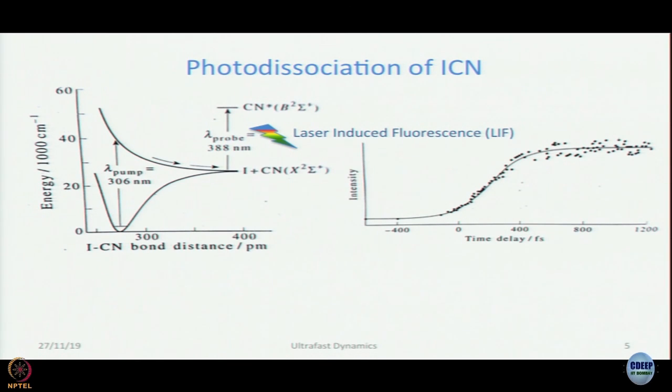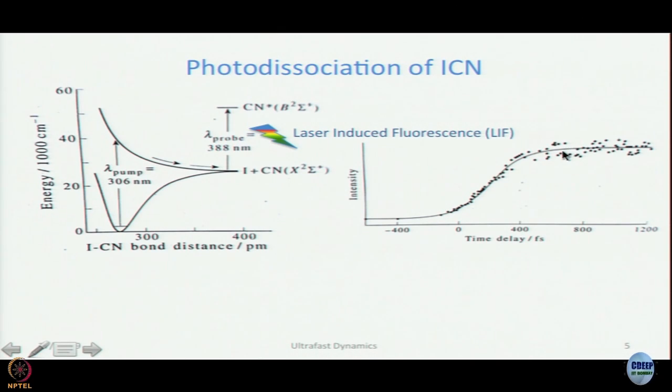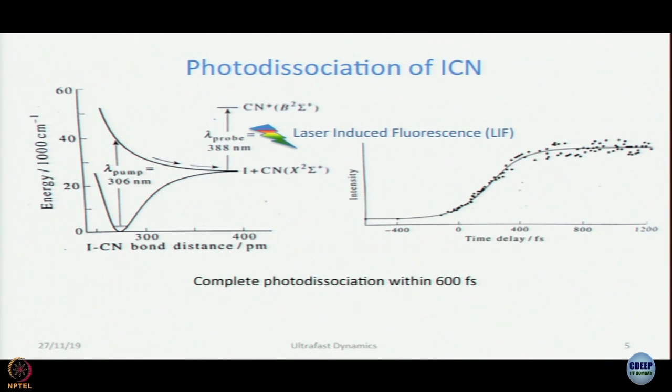They did observe a rise in the laser-induced fluorescence signal characteristic of the CN* fragment. The photodissociation is complete within about 600 femtoseconds; from zero time to 1200 femtoseconds the signal levels off. When fit to a rise, the time constant is 205 ± 30 femtoseconds. The expected theoretical value is 170 femtoseconds — this is a very good match between experiment and theory. This phenomenal result vindicates the theory and provides direct evidence of how long it actually takes for a bond to break.